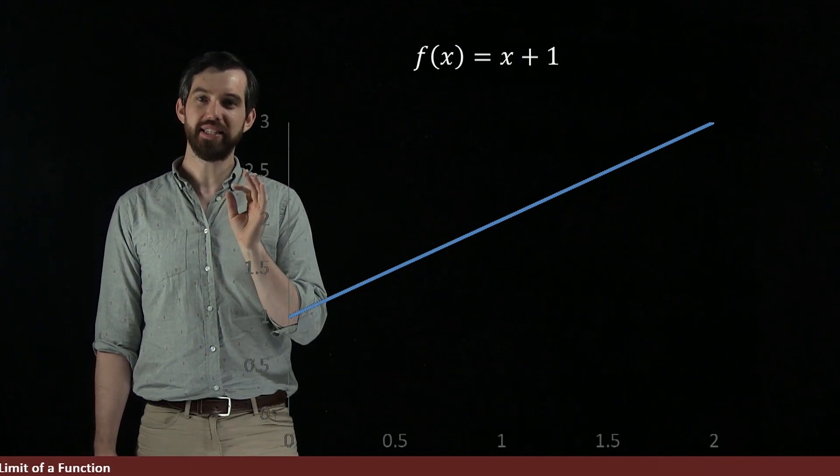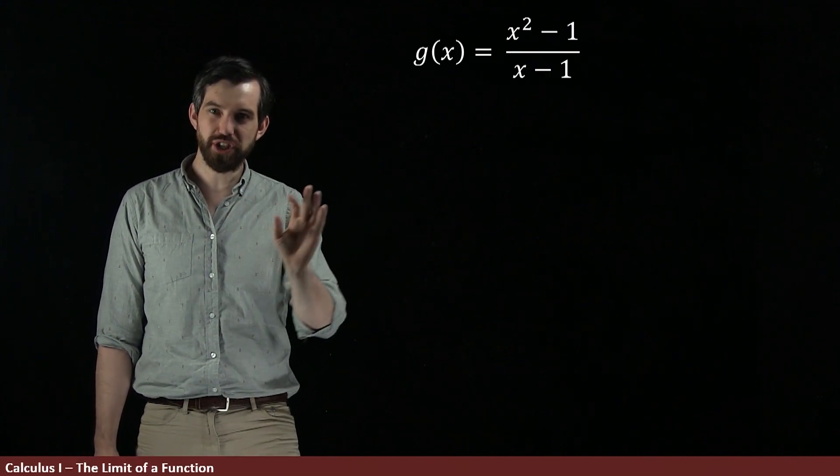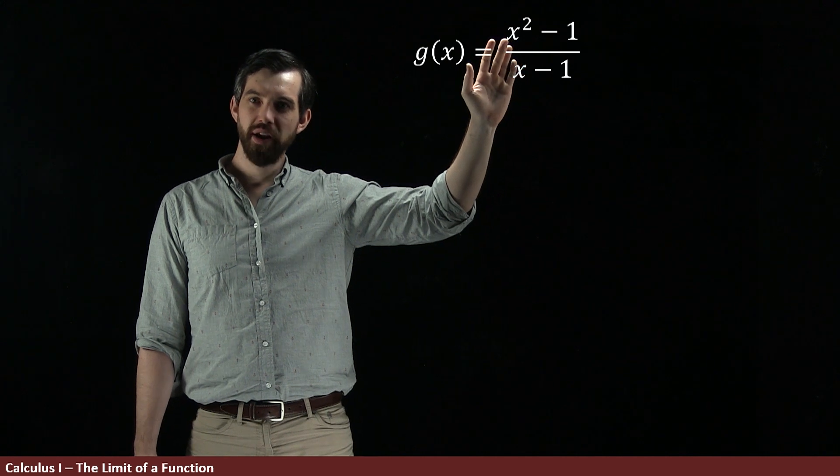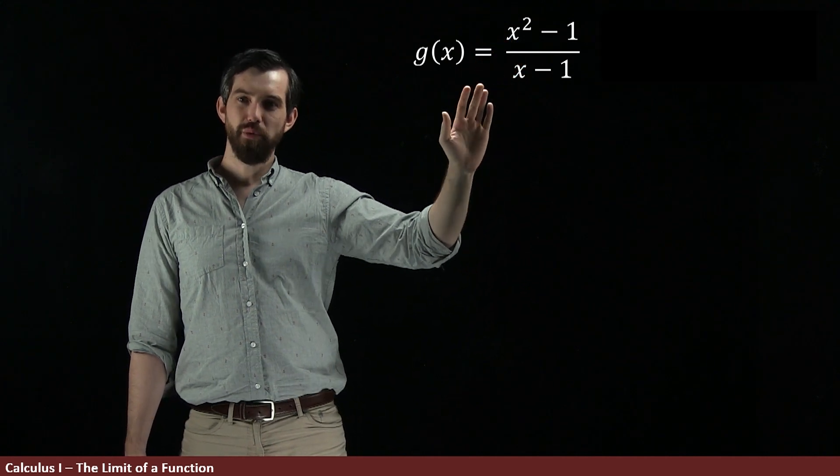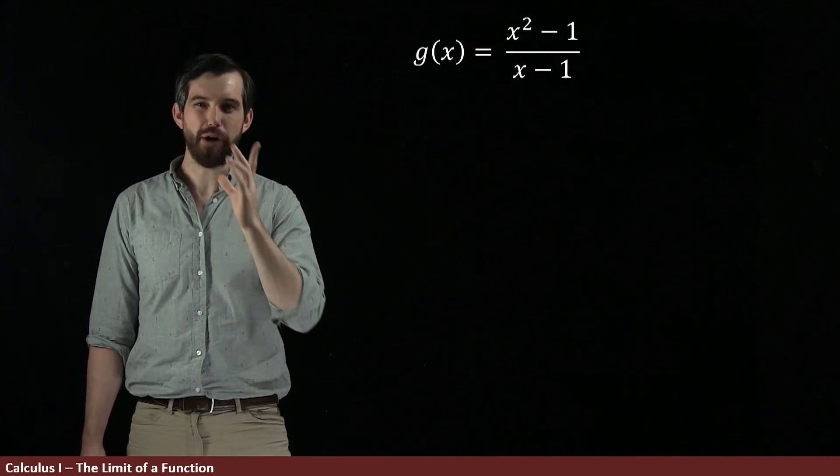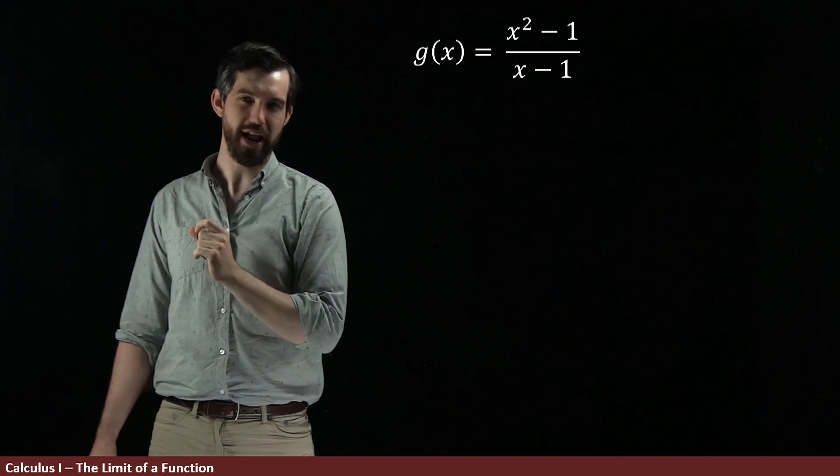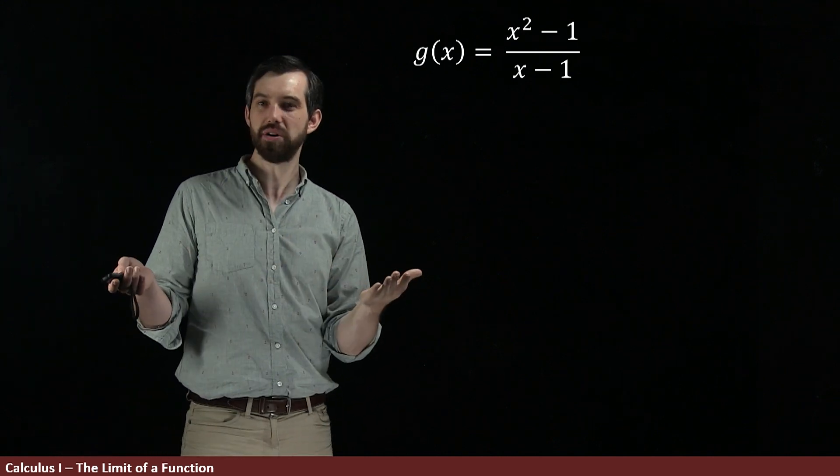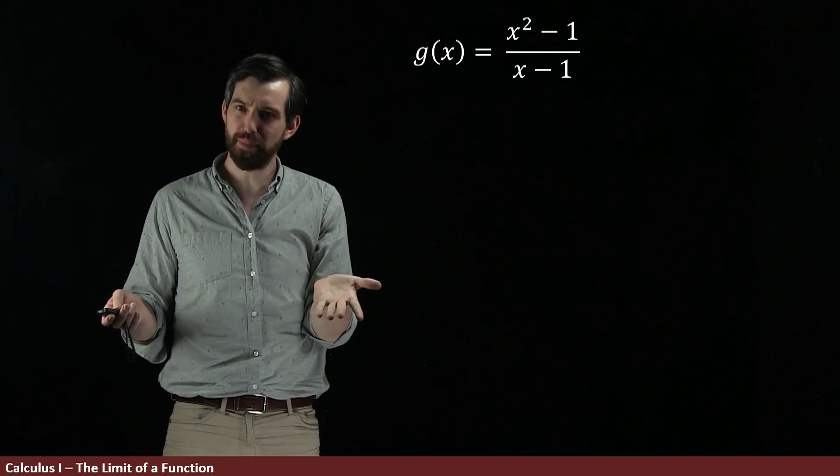Now I want to look at g, which is x squared minus 1 over x minus 1. Whenever we have something like this, a polynomial on the top and a polynomial on the bottom, I want you to have an alarm bell going off in your head that says, can I factor? Can I perhaps cancel something from the top and the bottom?